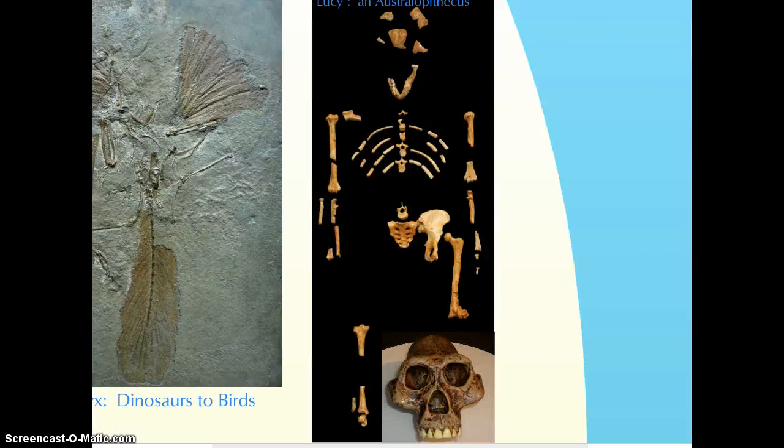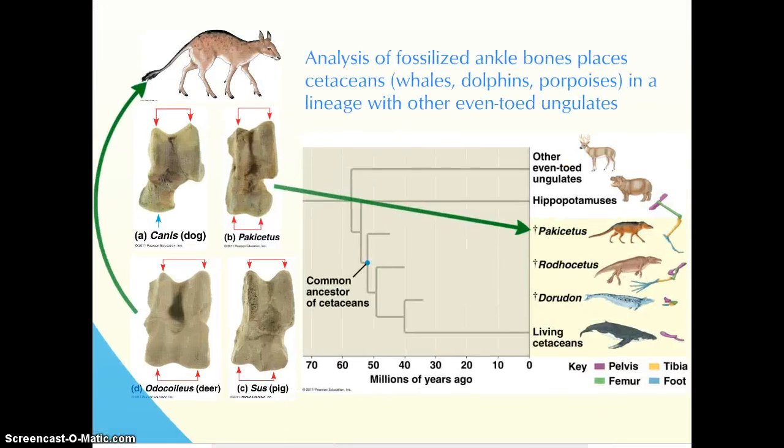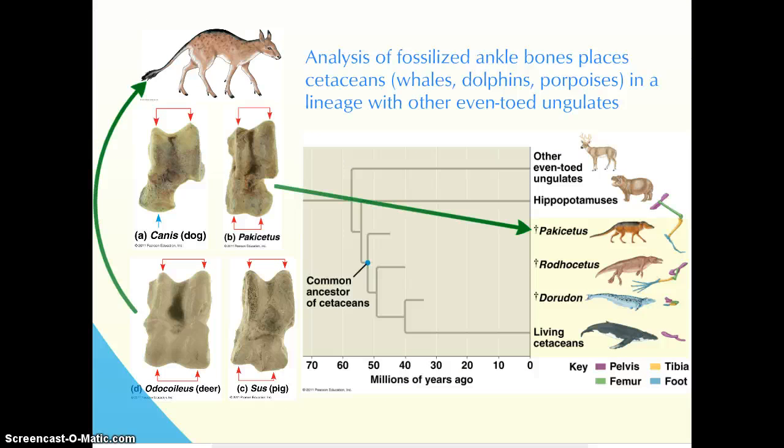Lucy is a quite famous organism. She lived, I want to say five, six, seven million years ago, and is an upright organism. You can tell by the shape of her spine and pelvis and her leg bones that she was an upright organism, but had the skull that is transitional from other primates to something that tends to be more homo-like or human-like.